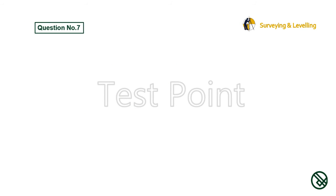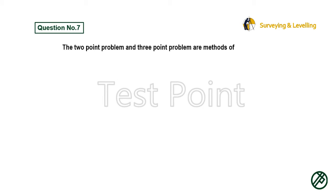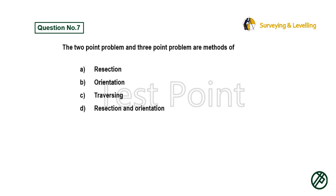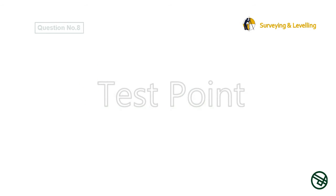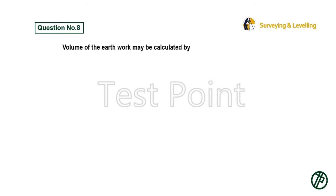Question 7: The two-point problem and three-point problem are methods of — Option A: Resection. Option B: Orientation. Option C: Traversing. Option D: Resection and orientation. Answer is Option D: Resection and orientation.